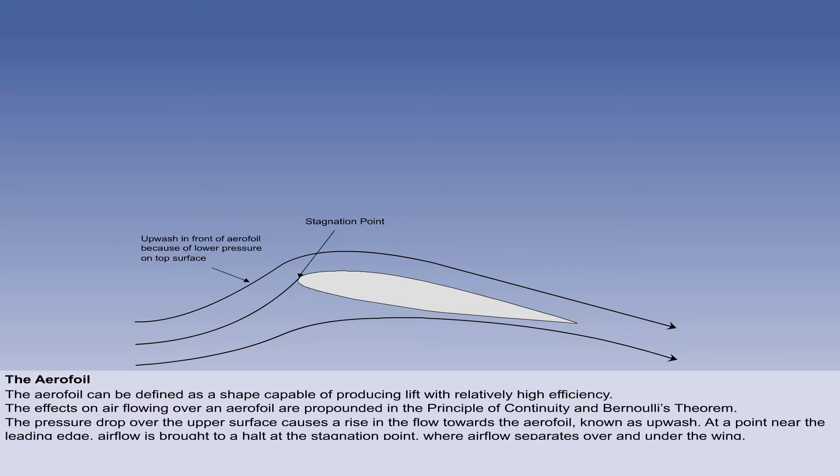Even before the airflow reaches the aerofoil, the pressure drop over the upper surface will cause the flow to rise towards it. This is known as upwash. At a point on the lower side of the leading edge, the airflow will be brought to a halt at a point called the stagnation point, where the airflow separates to pass over or under the wing.